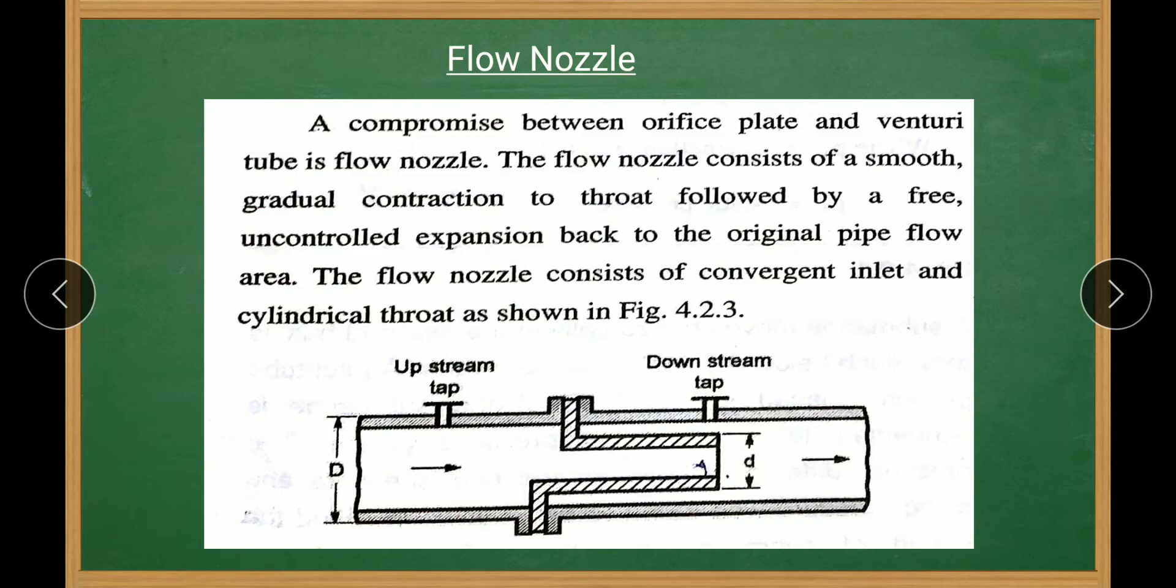A compromise between orifice plate and venturi tube is a flow nozzle. The flow nozzle consists of smooth gradual contraction to the throat, followed by a free and controlled expansion back to the original pipe flow area. The flow nozzle consists of convergent inlet and cylindrical throat as shown in the figure.